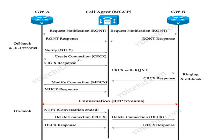Here is the message flow showing the commands exchanged between gateways. You have Gateway 1, Gateway 2, and the MGCP media gateway controller in between. When a number is dialed and signaling establishes, the controller first creates a connection with the media gateway using CRCX (Create Connection), then modifies it with MDCX (Modify Connection). When the 200 OK response comes, conversation between the two gateways starts.